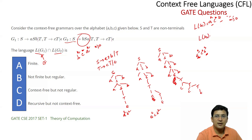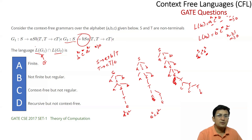The language generated by grammar G2 is similar, but starts with B and ends with A. So L(G2) = { B^n C^m A^n | n ≥ 1, m ≥ 0 }. The question asks about the intersection L(G1) ∩ L(G2).